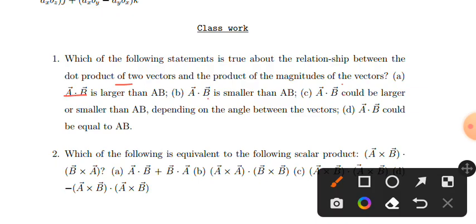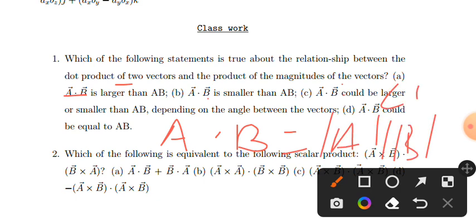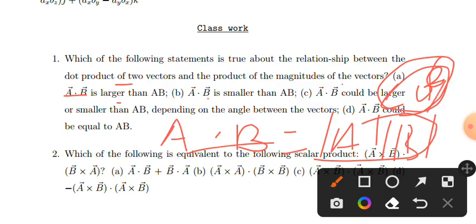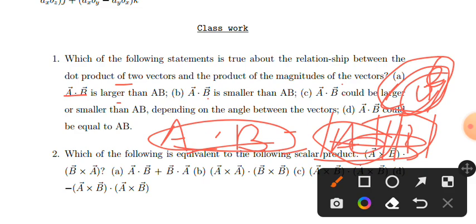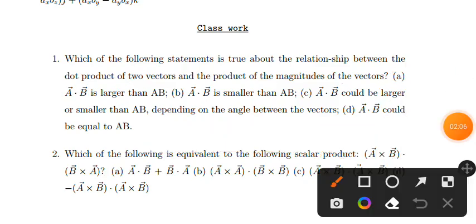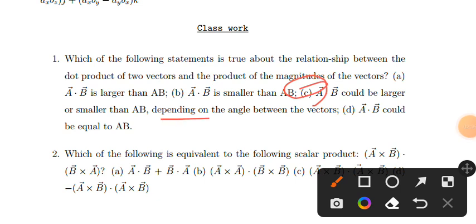A·B equals magnitude of A times magnitude of B times cos(theta). So A·B depends on the cosine. The magnitude of A times magnitude of B is independent. Cos(theta) can be zero, positive, or negative depending on what angle is between them.